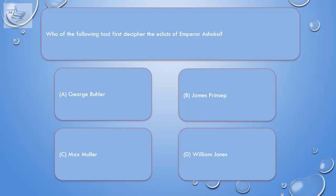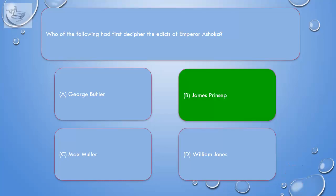Question: Who of the following had first deciphered the edicts of Emperor Ashoka? A. George Buhler, B. James Princep, C. Max Muller, D. William Jones. Correct answer is B. James Princep.